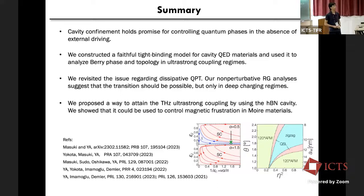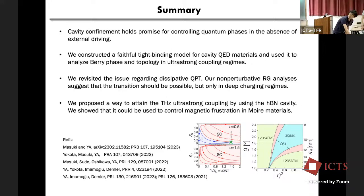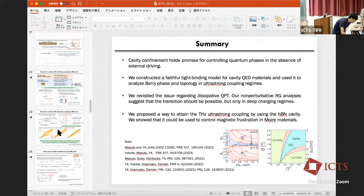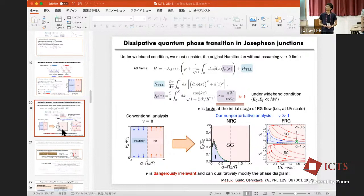Thank you, Yuto. We have time for questions. First question: on the QPT part, is the dissipative phase transition also BKT? Could the universality class be affected by the nonlinearity of the cosine term? We didn't carefully check the nature of this critical point. It could be — this is rather an unusual fixed point of the boundary sine-Gordon model because the variable nu corresponds to the boundary term with some localization length, and in some coupling limit it actually diverges. Honestly, we don't have good intuition yet.